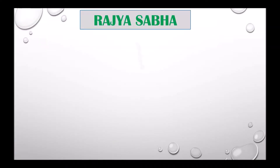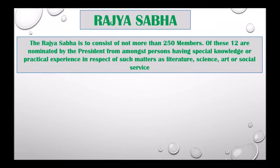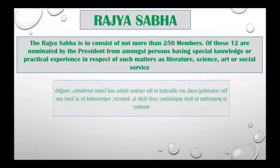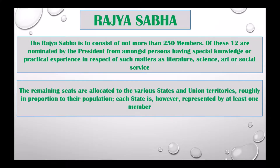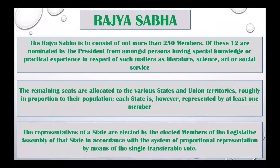First we will see about the Rajya Sabha. The Rajya Sabha is to consist of not more than 250 members. Of these, 12 are nominated by the President from amongst persons having special knowledge or practical experience in respect of such matters as literature, science, art, or social service. The remaining seats are allocated to the various states and Union territories roughly in proportion to the population, and each state is represented by at least one member.